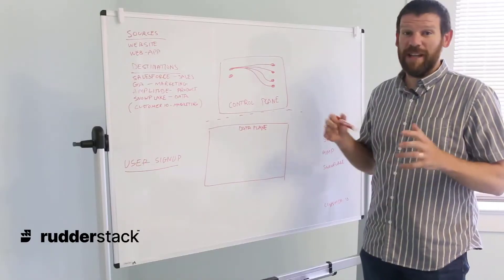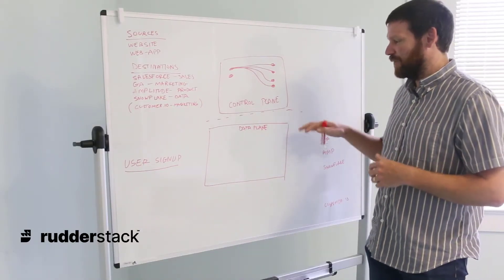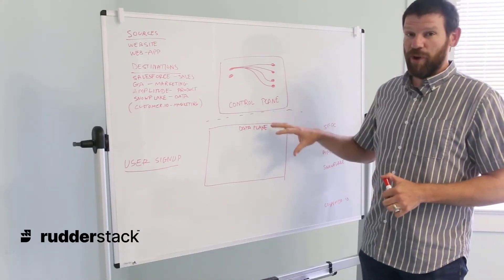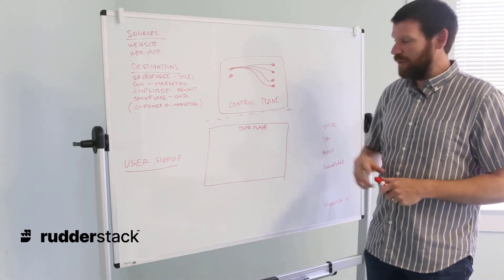Now we're going to discuss the data plane. This is where our data is actually sent, processed, and delivered to the downstream destination. This is where the bulk of the work of RudderStack is happening in the server itself.